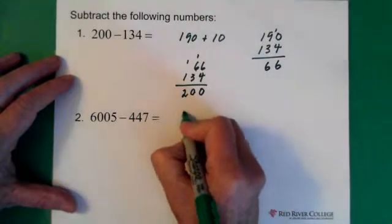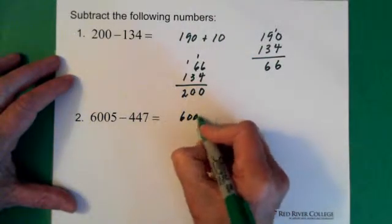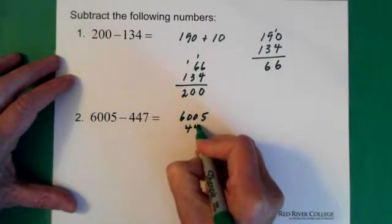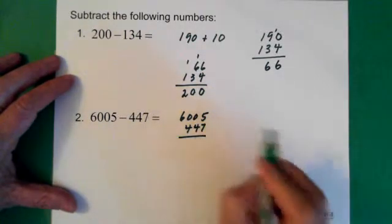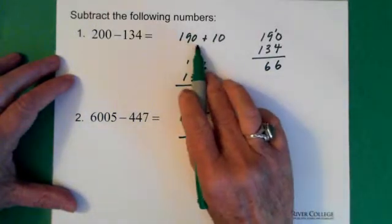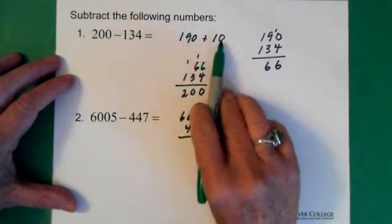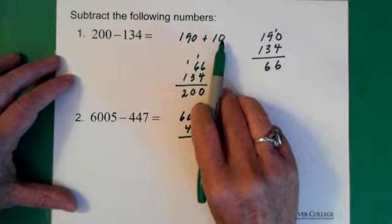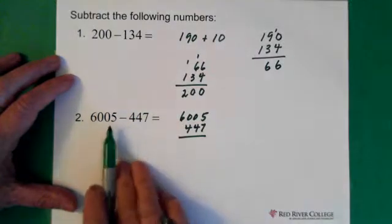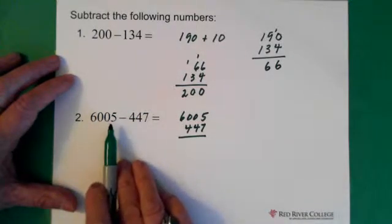Next one: 6,005 minus 447. Now, remember in this one, we split it into 190 plus 10. We just pulled 10 out of the 200. So that's what we have to do here. We have to pull 10 out of the 6,005.